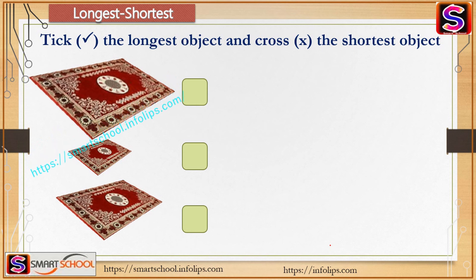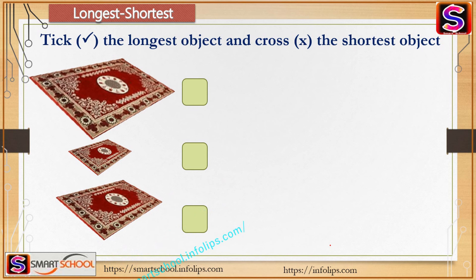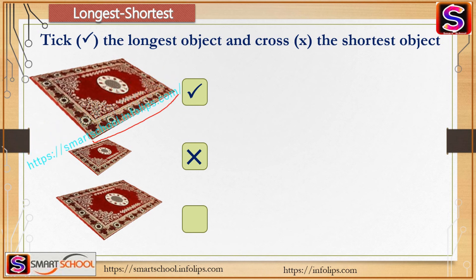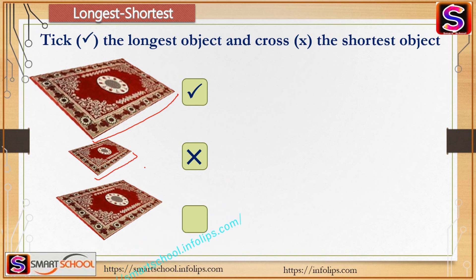There are three mats. Tell me which is longest — the first one is longest, and the second one is shortest, because the first mat has a very big length whereas the second mat has a very small length.